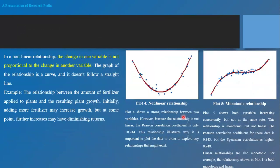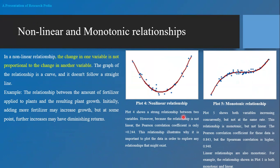There is also a non-linear and monotonic relationship. A parabola shape or curve shape is known as a monotonic relationship, while other curve shapes represent non-linear relationships. In a non-linear relationship, the change in one variable is not proportional to the change in another. For example, the relationship between fertilizer applied to a plant and resulting growth — initially adding more fertilizer increases growth, but further increases have diminishing returns.